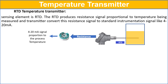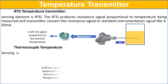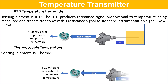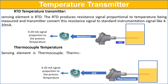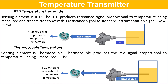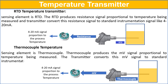In the thermocouple temperature transmitter, the sensing element is a thermocouple. The thermocouple produces a millivolt signal which is proportional to the temperature being measured. The transmitter converts this millivolt signal to the standard instrumentation signal like 4 to 20 mA.